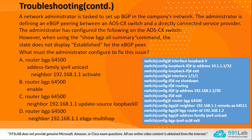Analyzing the configuration: interface loopback 0 is configured with IP 10.1.1.1/32, and interface 1/1/1 is a routed interface with IP 192.168.1.2/30. Neighbor 192.168.1.1 is defined with remote-as 64511 — an eBGP neighbor with a different AS number. The BGP router-id is 192.168.1.2. Under the address family, the neighbor is not activated — there is no neighbor activation command under address family.